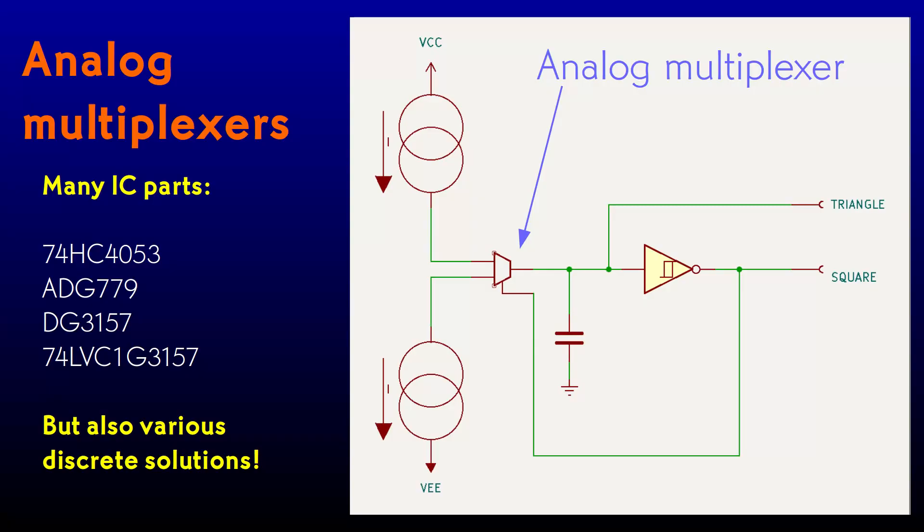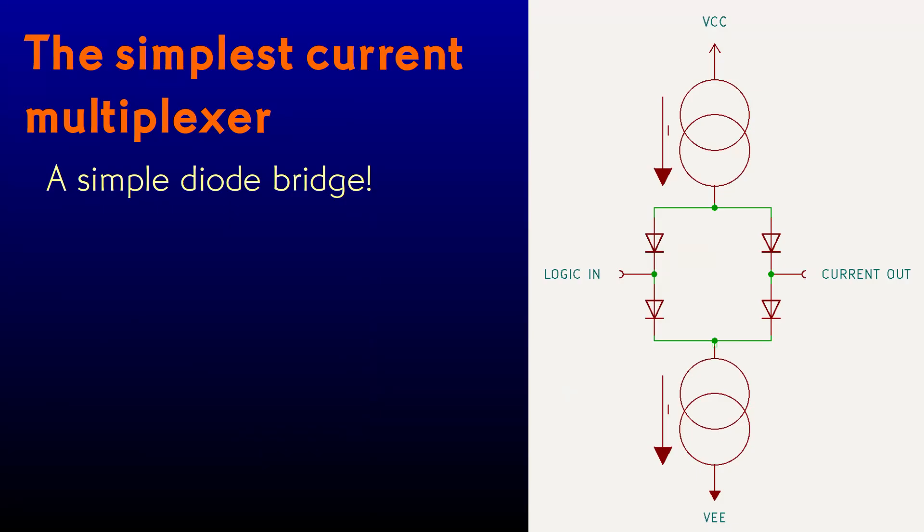The analog switch function is useful enough that there are a lot of ICs out there that do it. I have a few example part numbers on the screen. But I'd like to show a discrete solution for switching our currents that uses parts I already have. The simplest solution that I thought of quickly was a diode bridge.